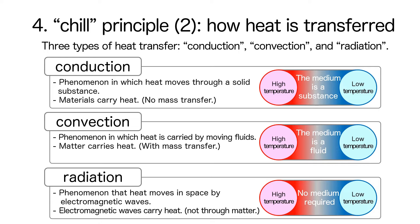There are three types of heat transfer: conduction, convection, and radiation. Conduction and convection are the ways in which heat is transferred by matter, and radiation is the way in which heat is transferred by electromagnetic waves that do not involve matter. The purpose of shaking — chilling — is the transfer of heat inside the shaker, so the explanation of radiation is omitted in this video.